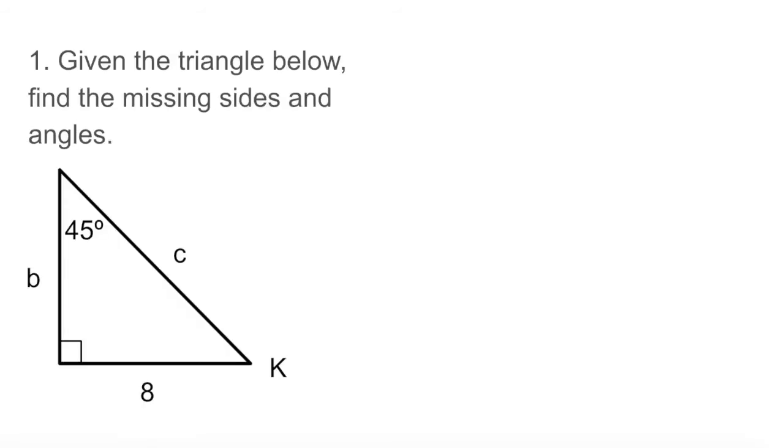Given the triangle below, find the missing sides and angles. Well look, what we're given is that the triangle has one side of 8, and then two unknown sides, including the hypotenuse, and we have a 90 degree angle here. This is 90 degrees, and this one is 45 degrees.